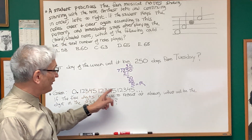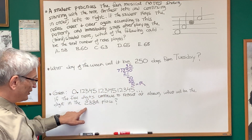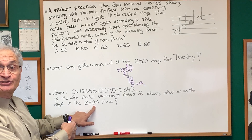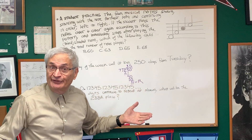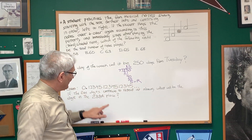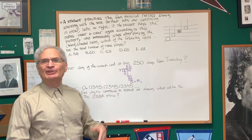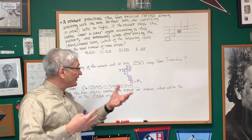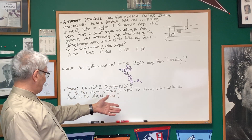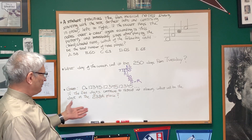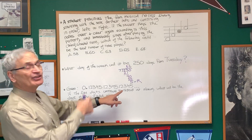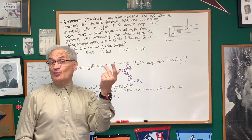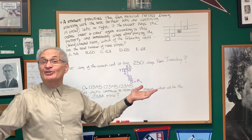Counting in groups of five: 1, 2, 3, 4, 5 — 1, 2, 3, 4, 5 — that's 10. For 238, we look at the closest multiple of five, which is 235. So 238 is simply three more than the most recent multiple of five. Therefore, the 238th digit falls in the third position after the most recent multiple of five — that is, the digit three. One, two, three — and there is our answer.